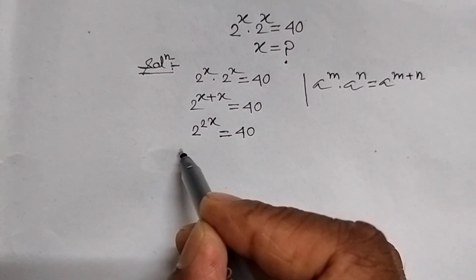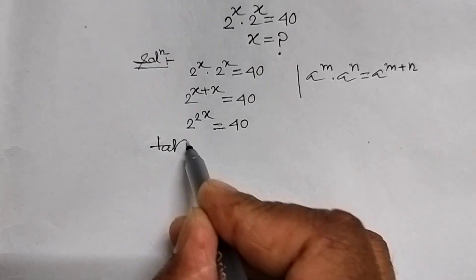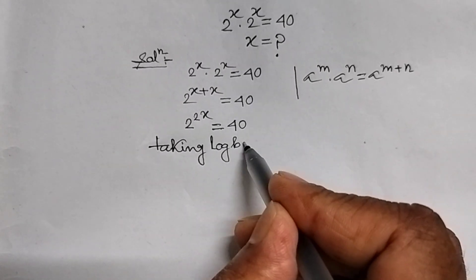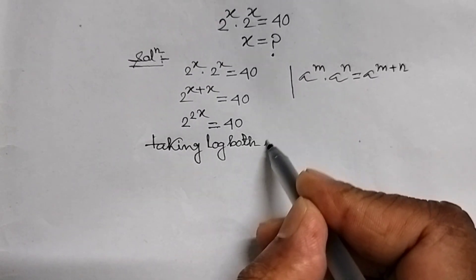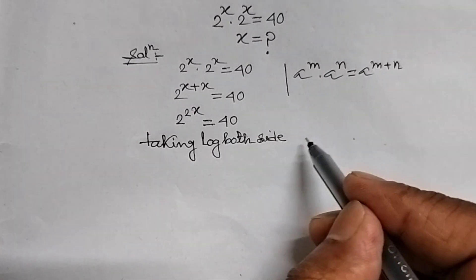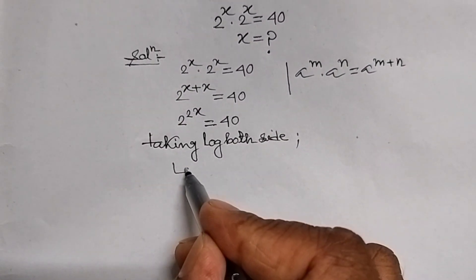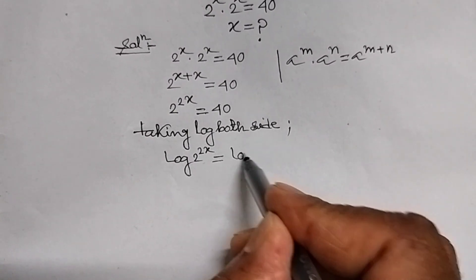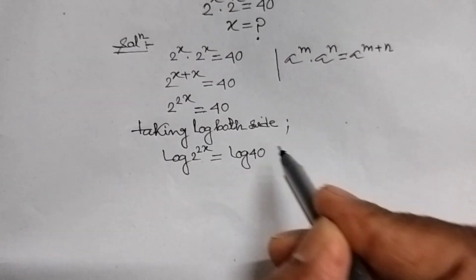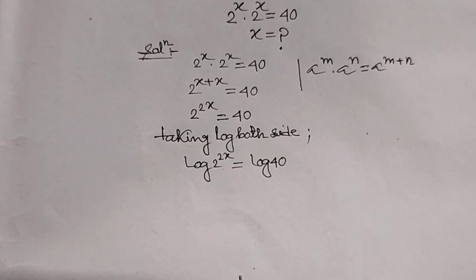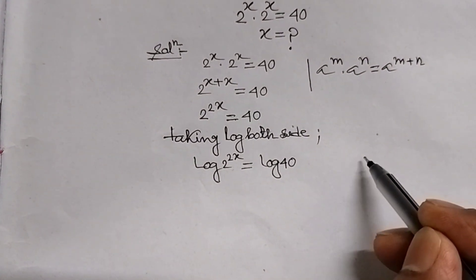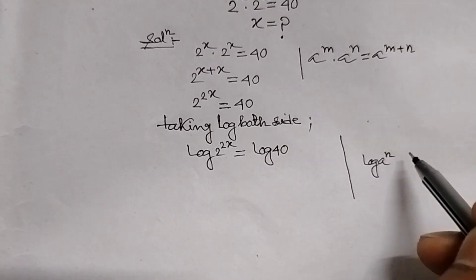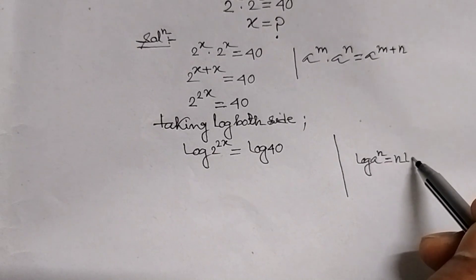Now, taking log both sides of the above equation, we get log of 2 power 2x equal to log of 40. Now, since we know the formula log of a power n equal to n log of a.